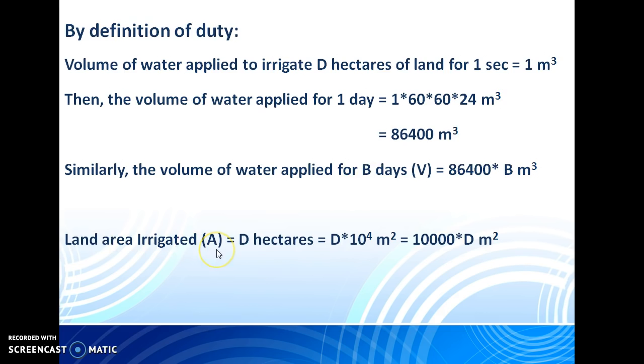Let us consider capital A is the land area to be irrigated. Then, land area to be irrigated equals D hectares, that is equal to D times 10 to the power of 4 square meters. Since 1 hectare equals 10 to the power of 4 square meters, that is equal to 10,000 times D square meters.